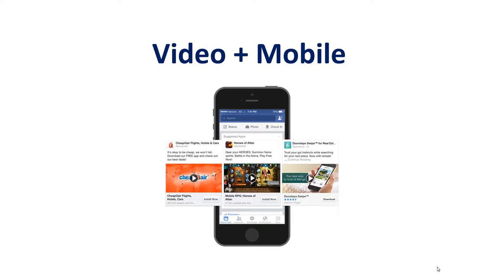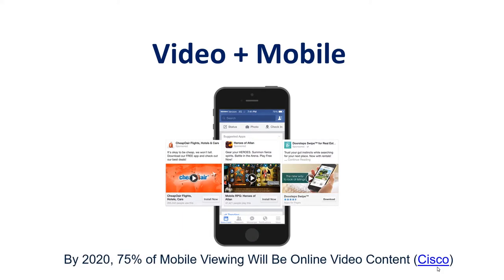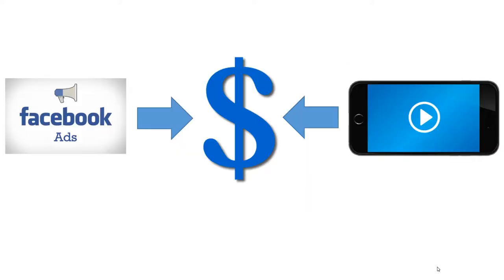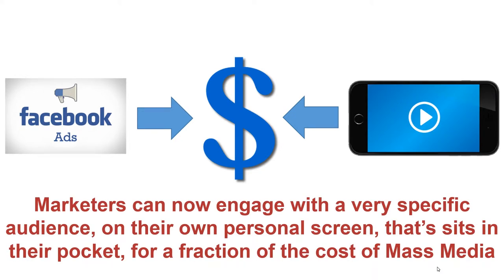When you add video with mobile devices, this is where it gets really exciting. By 2020, they say that 75% of mobile viewing will be online video content — so everyone with a mobile device, 75% of the time they're watching video. And again, if you don't have video, you're going to be invisible. When you add Facebook ads, video, and mobile devices, marketers can now engage with a very specific audience on their own personal screen for a fraction of the cost of mass media. Television ads, newspaper, radio — they don't compare at all to what we have now. Every business owner has an opportunity to reach their very specific target audience using video on mobile devices.